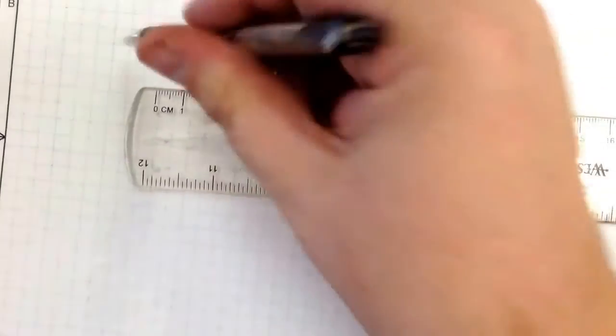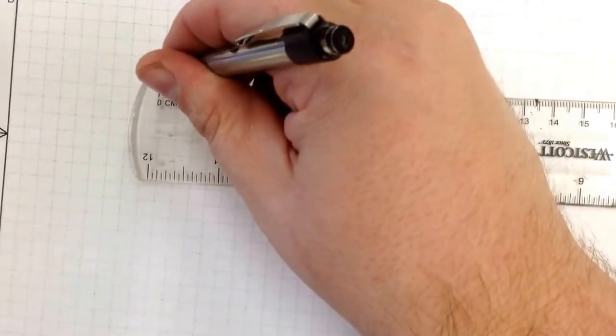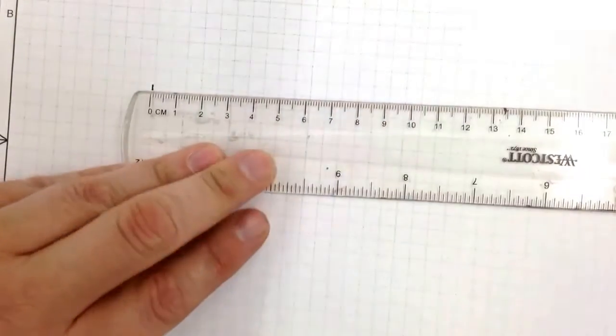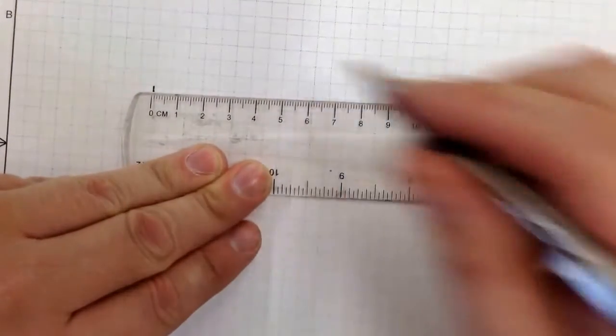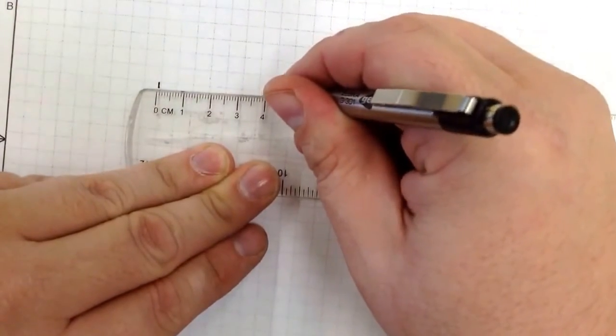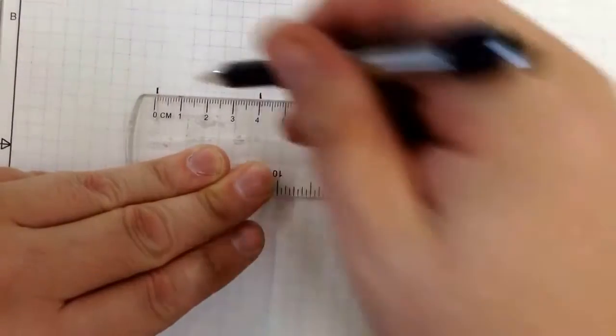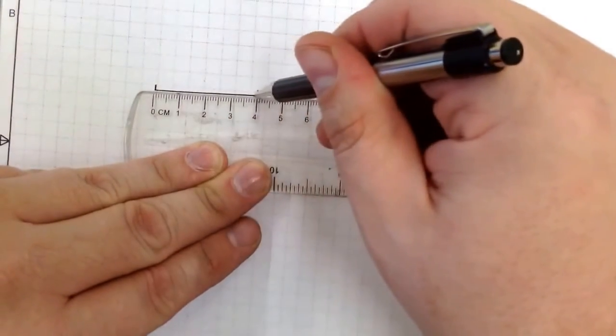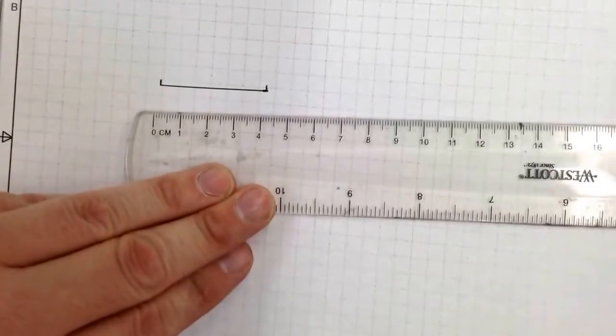So starting at zero, if I have something that says it's four centimeters long, I go to the four right there. And that length is four centimeters. See it?